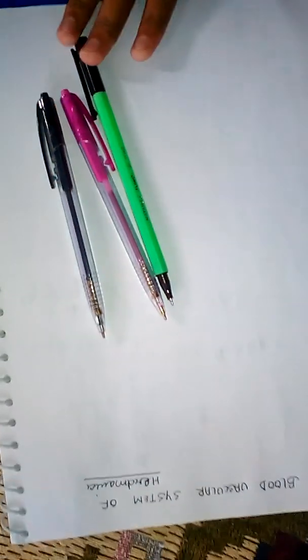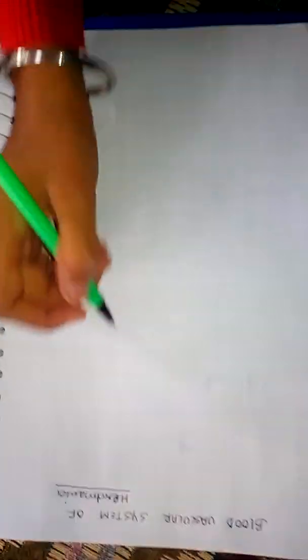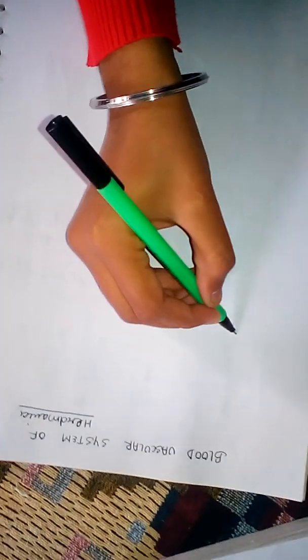Today we will discuss the blood vascular system of heart mania. We will draw heart mania's diagram. For this we will require three pens of different colors. We will start with the blue pen. Let us first discuss about the outer boundary — it is like this.